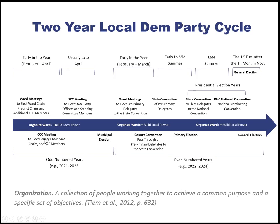In a two-year cycle, in odd-numbered years we have ward meetings where we elect our local leadership — ward chairs, precinct chairs, additional CCC members, and rules and platform committee members. Then we have a CCC meeting where those elected people choose our county chair, county vice chairs, and our representatives to the CCC. Then in late April — this year on April 24th — we have a CCC meeting where we elect our state party officers and standing committee members.